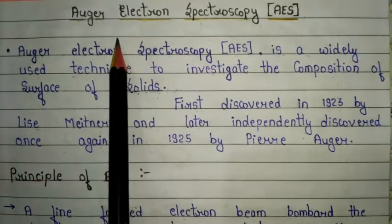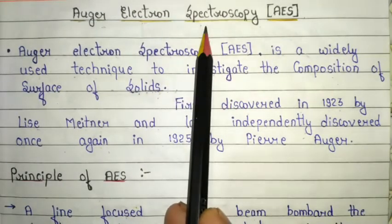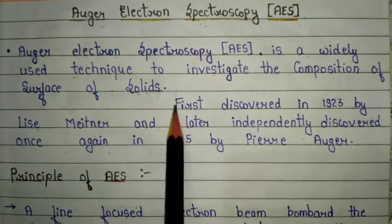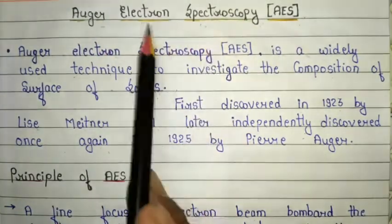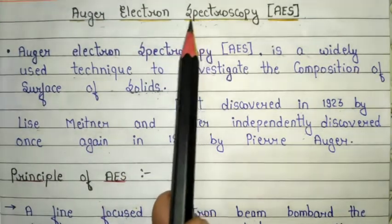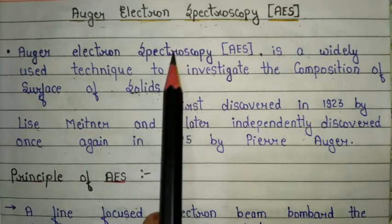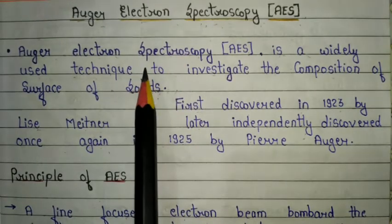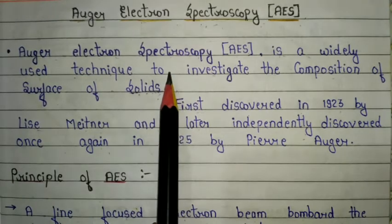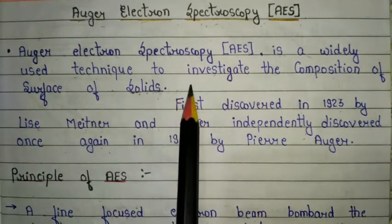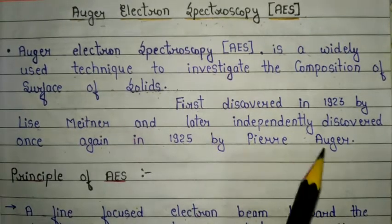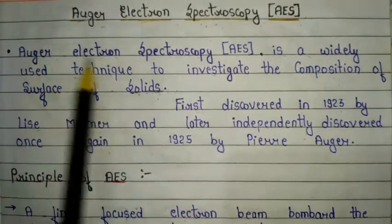Let's move to the topic. The first topic is Auger electron spectroscopy, also referred to as AES. Auger electron spectroscopy is one of the important topics of scattering spectroscopy. It is also very important from the semester exam and CSIR NET exam point of view. We have to know about the basic concept of Auger electron spectroscopy.